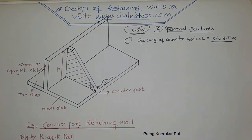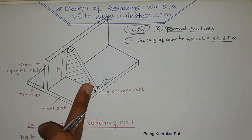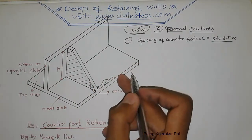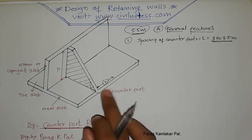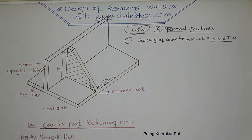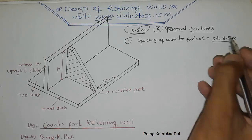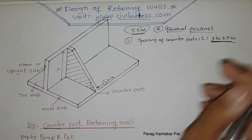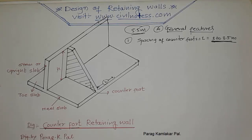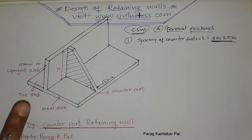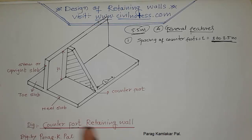The counterforts are provided at equal spacing L along the retaining wall. In general, the spacing L between counterforts is 3 to 3.5 meters. So the counterfort is placed at a buffer distance of 3 to 3.5 meters. To summarize: the components are the stem, toe slab, heel slab, and counterfort, with counterfort spacing of 3 to 3.5 meters.